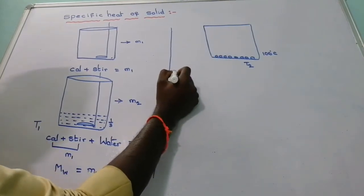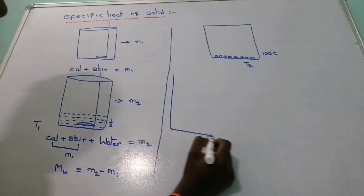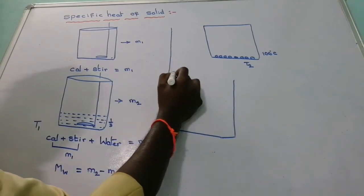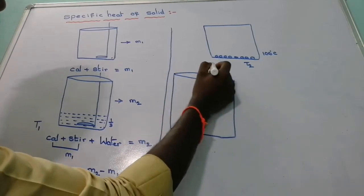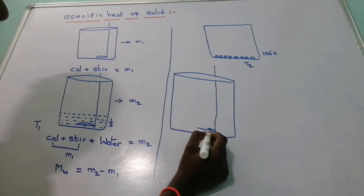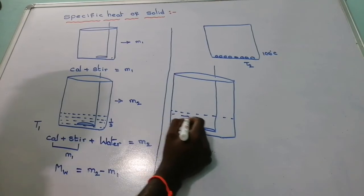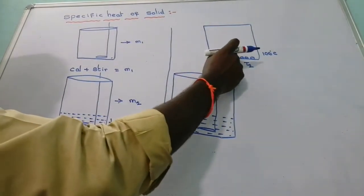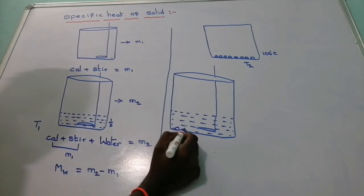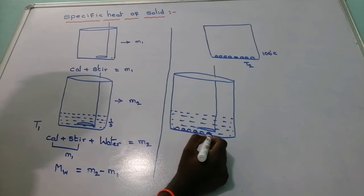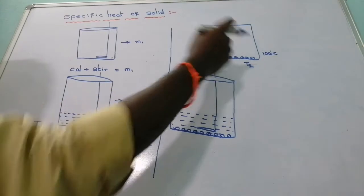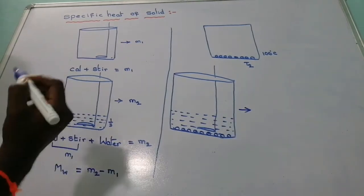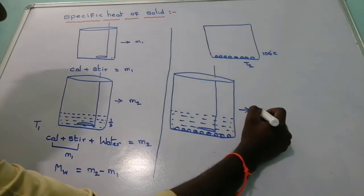Take these lead shots and place them into the calorimeter, which already contains one third volume of water. Transfer them with minimum loss of heat. After the lead shots are mixed into the calorimeter, consider the new total mass as M3.